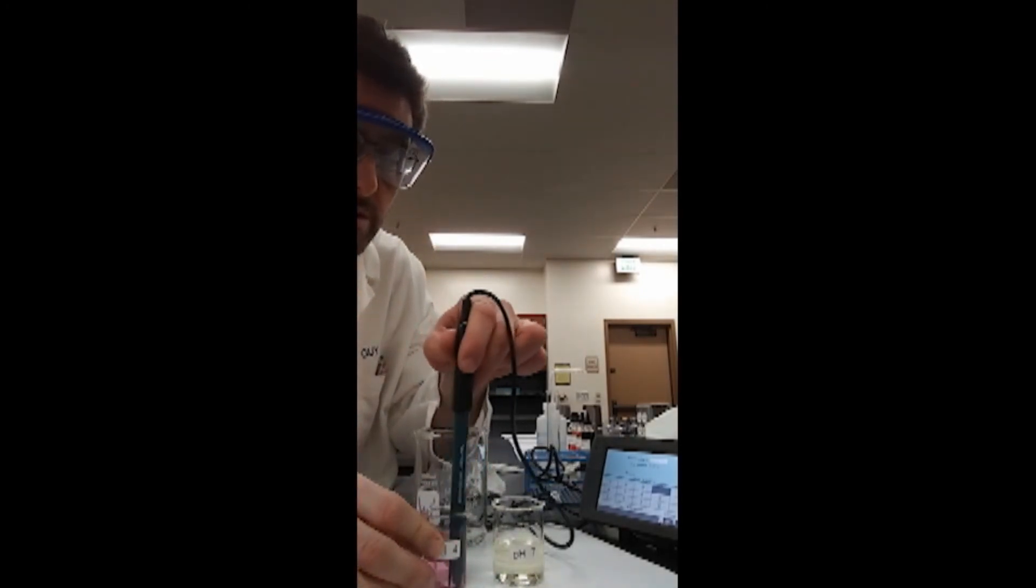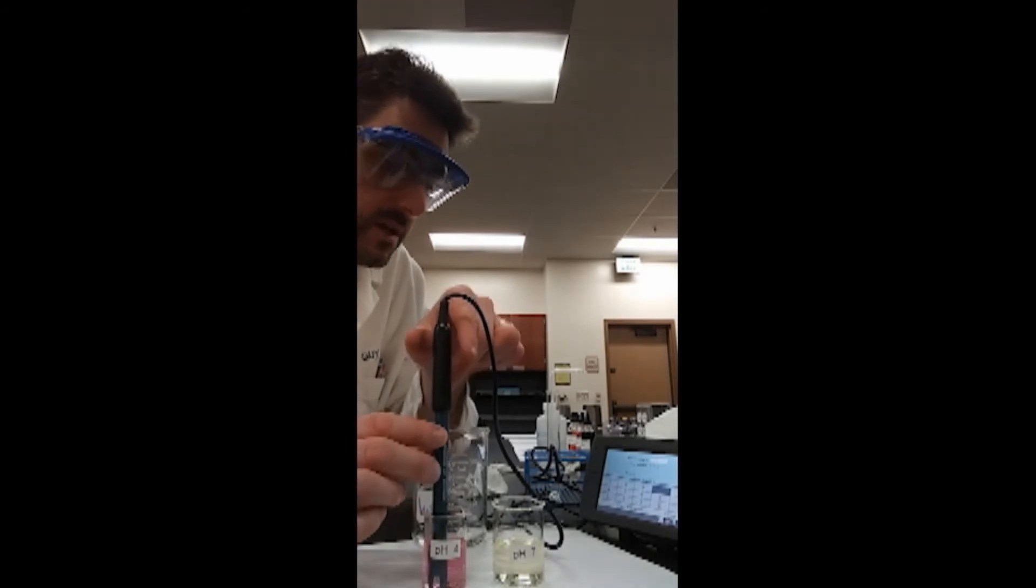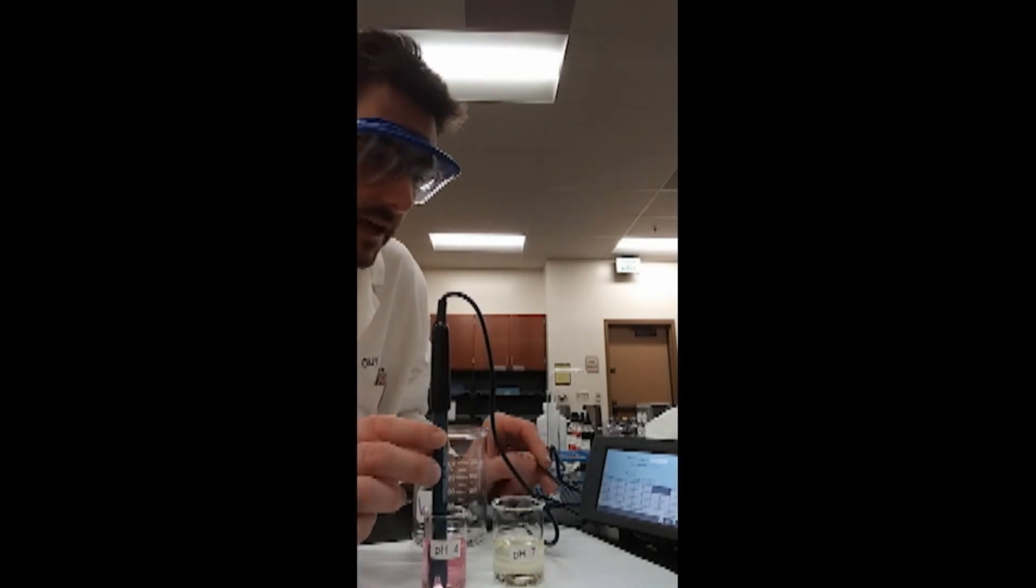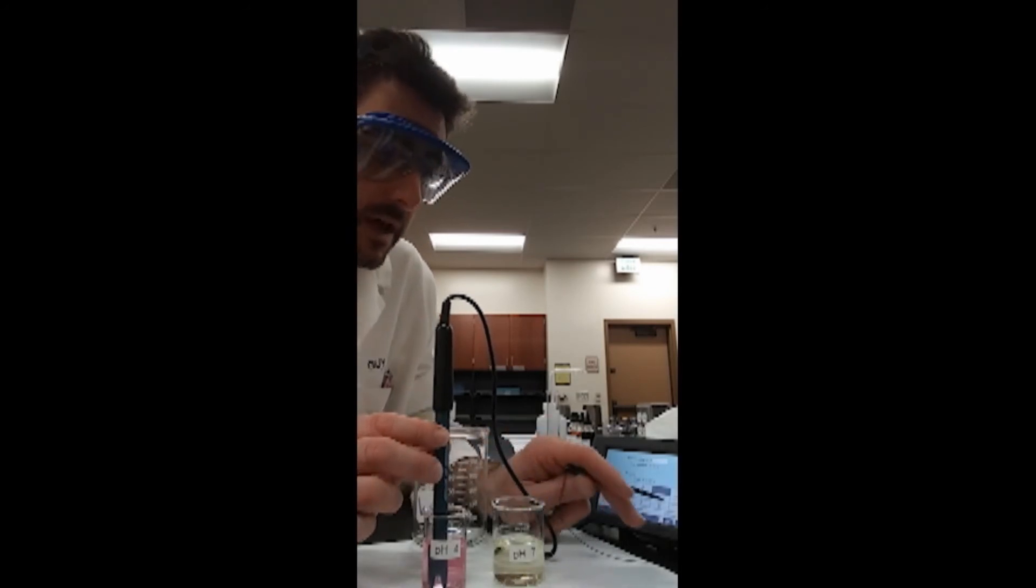I'll swirl, and again, wait for the millivolt voltage, which appears on the screen, to stabilize. At that point, I can type a pH value of 4, which represents the buffer's pH, and keep.